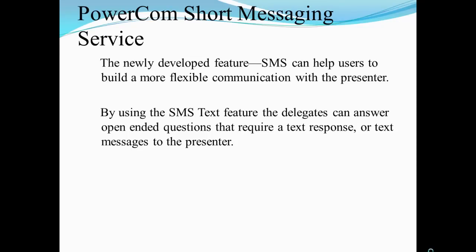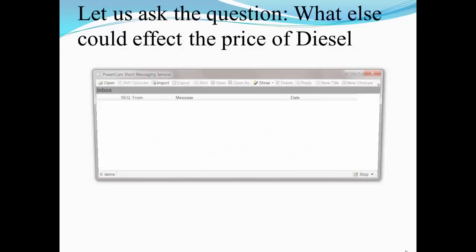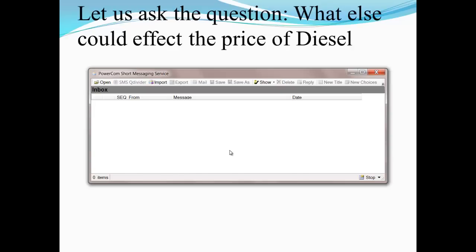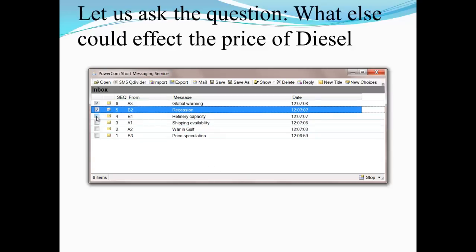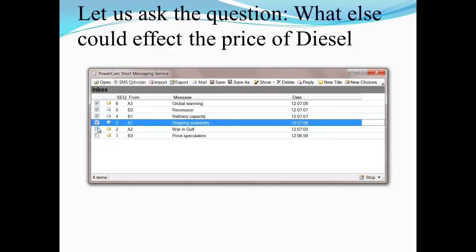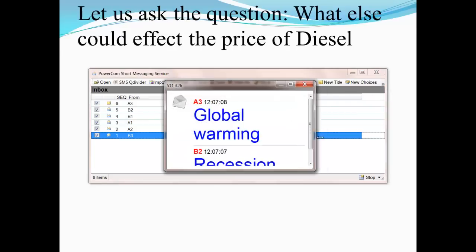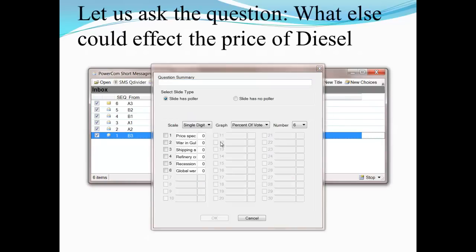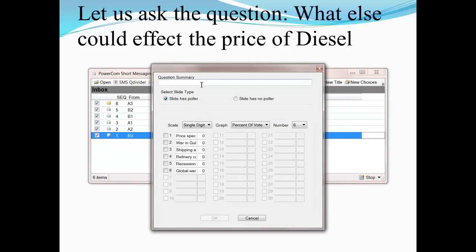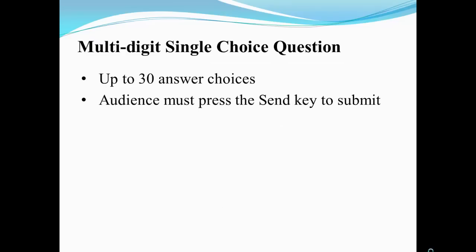Let's look at the text messaging feature of the Plus keypad and the Power Comp software. We ask the question: 'What else could affect the price of diesel?' and open the text messaging screen. People are entering text messages into their Plus keypads and sending them — responses include: price speculation, war in the Gulf, recession, refinery capacity. We can choose any or all of these options and make them larger using the pop-up screen facility. We can also choose the options as new answers for a new question, where the question is: 'Which is most likely?' Price speculation is considered the biggest choice.